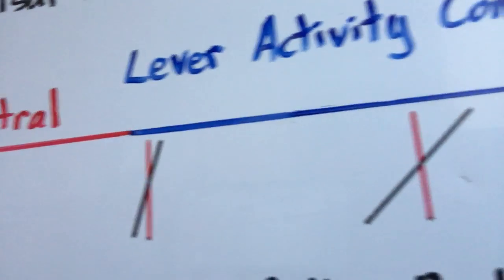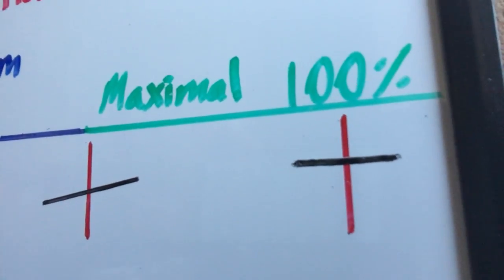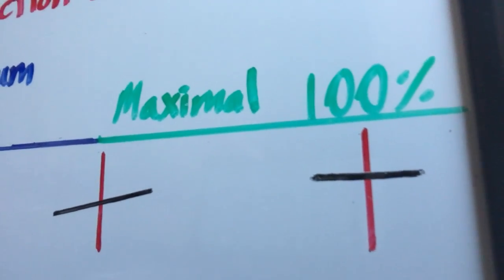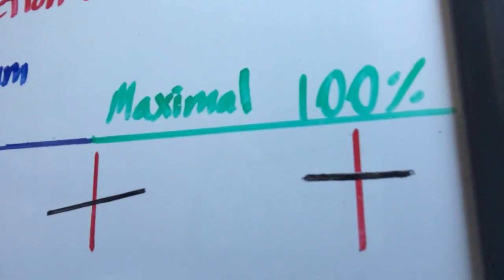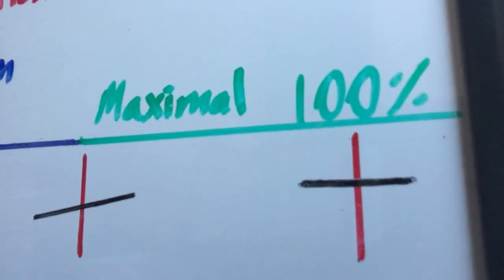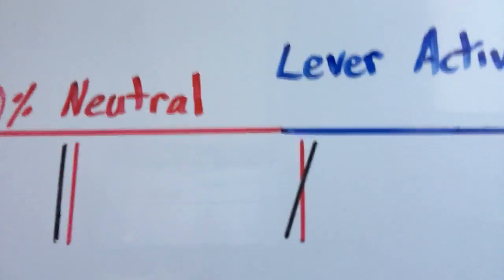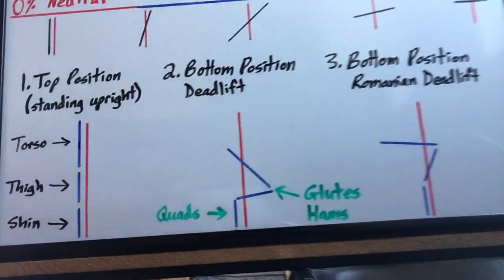As it rotates and travels towards more of a perpendicular position in relation to the direction of resistance, it becomes more and more active. Therefore, the muscles that pull on that bone or that lever have to produce the most amount of force to overcome the resistance and bring that lever back to a more parallel position. So how does this relate to the deadlift?